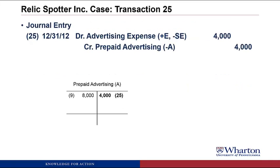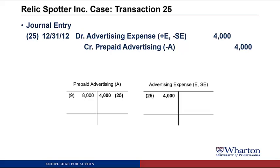We post this to T-accounts, so we post a credit to prepaid advertising. Now the balance will be $4,000, which is how much is prepaid as of December 31. And we create an advertising expense T-account with a debit balance.